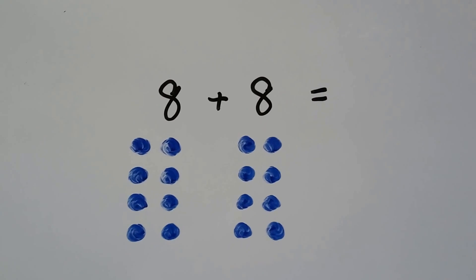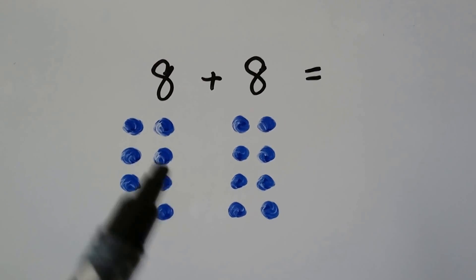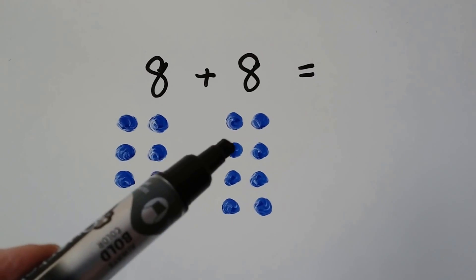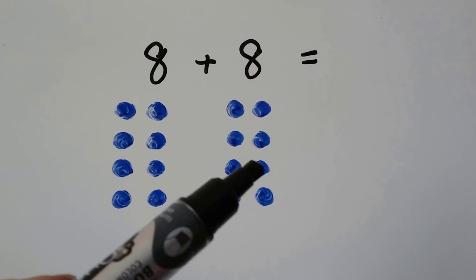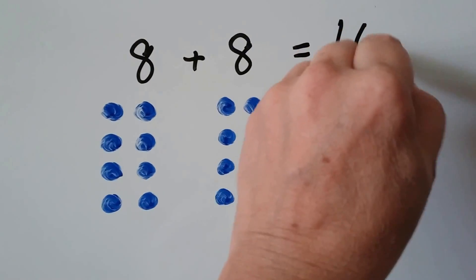Double eights. We have eight plus eight. Can you count with me? Eight, nine, ten, eleven, twelve, thirteen, fourteen, fifteen, sixteen. Eight plus eight is sixteen.